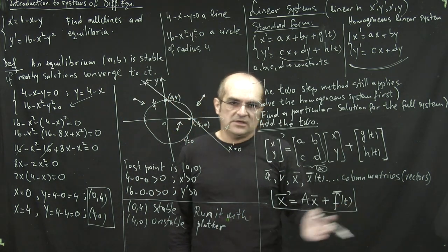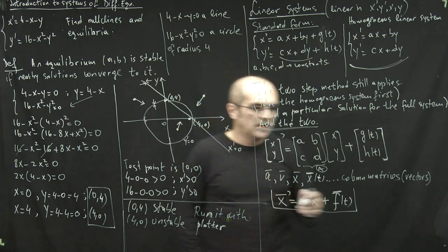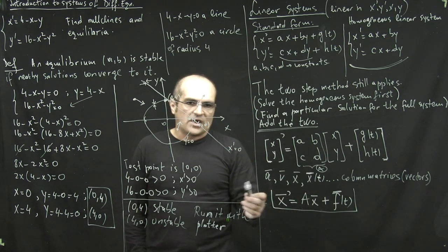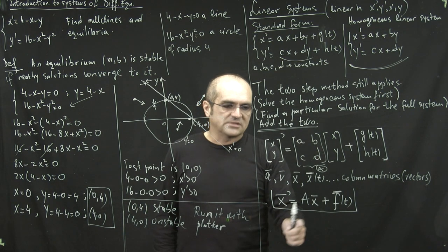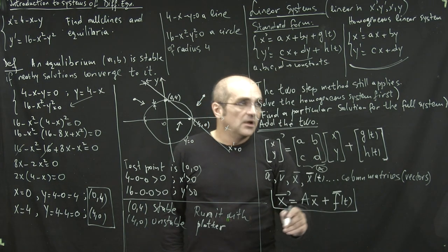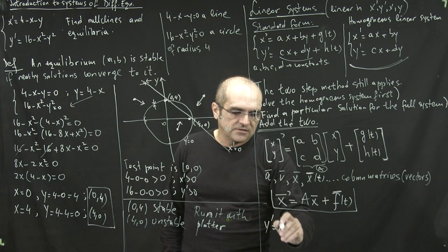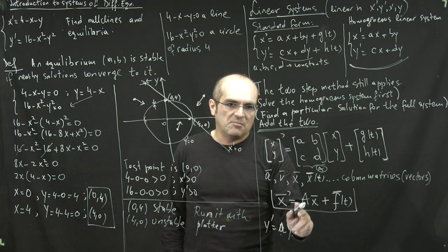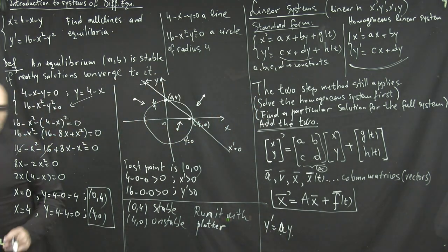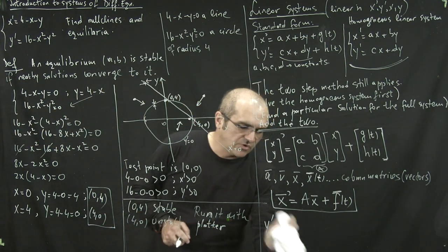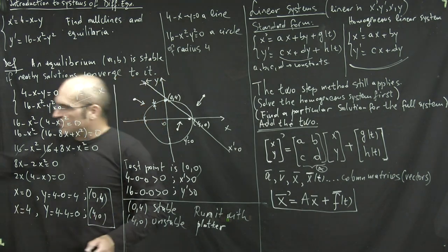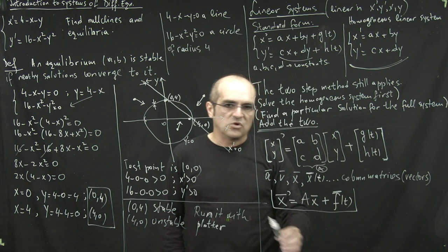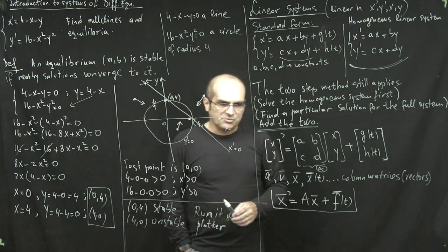This matrix form is analogous to the single ODE y-prime equals a constant times y, which has an exponential solution. Here we have a vector and a matrix instead of a number. This analogy is important: when solving the homogeneous part of a linear system, you assume an exponential format for the solution, just like the single ODE case.